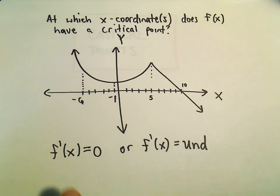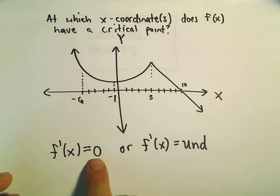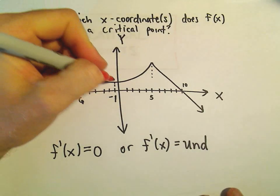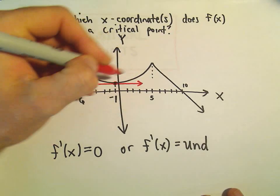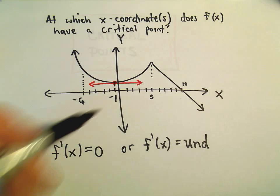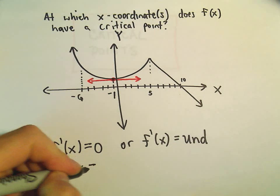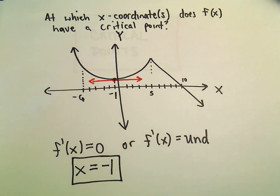Well, the derivative is going to equal zero. If you think about the derivative equaling zero, that means the slope of the tangent line has to equal zero. Well, at negative one, it looks like the slope of that tangent line could certainly equal zero. So I would say at x equals negative one, that's where the derivative equals zero. So in that case, that would be one of my critical points.